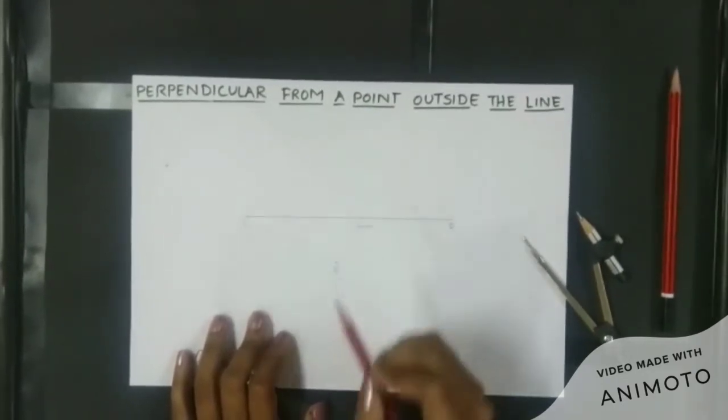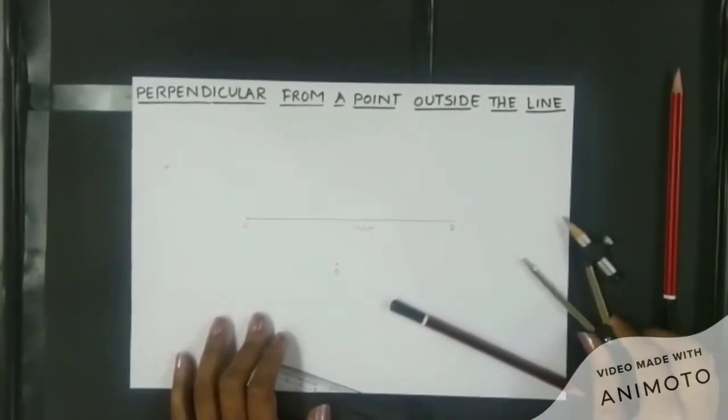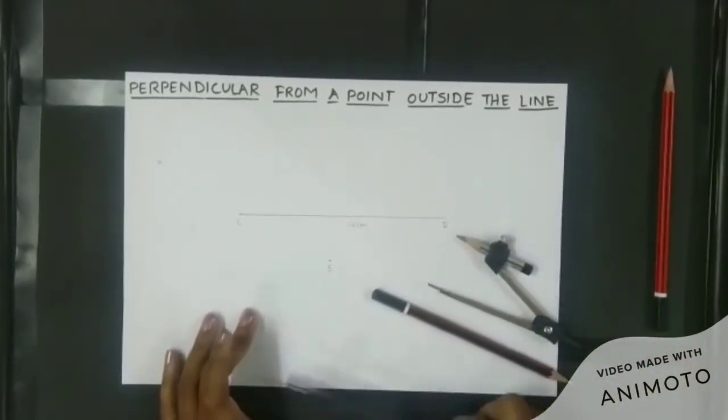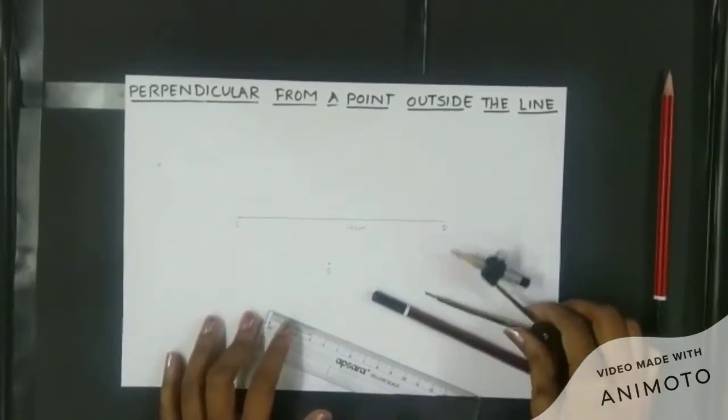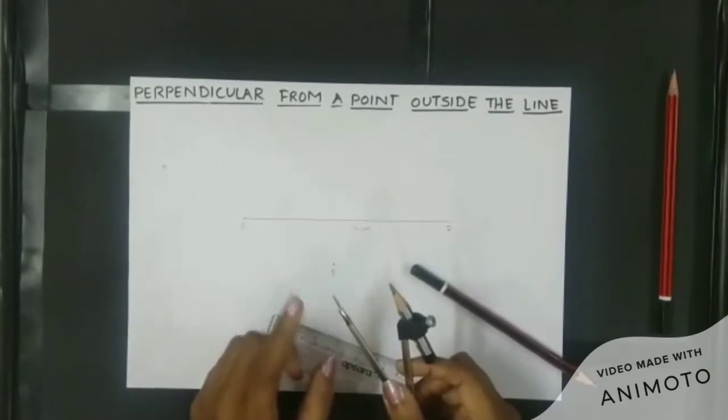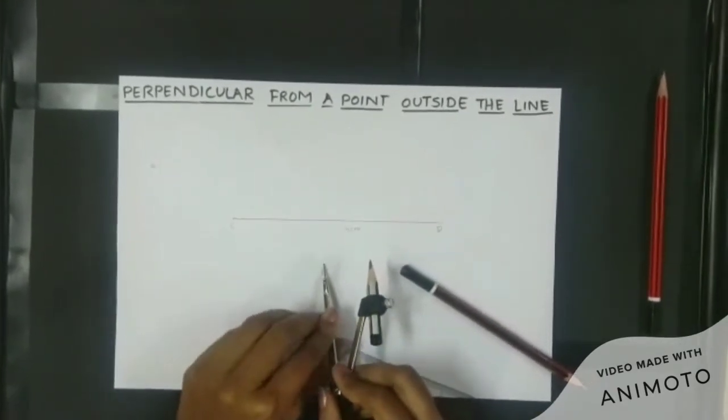So how do we do that? Let's learn the steps. Firstly we will need a compass, a pencil and a ruler. Take the compass, keep the pointed side of this compass on this point S and then take the distance till this line segment.